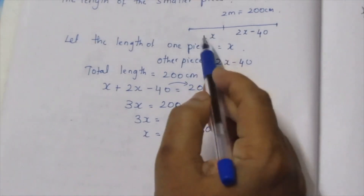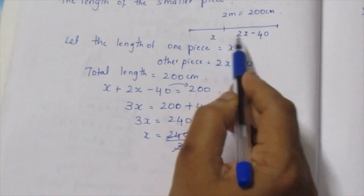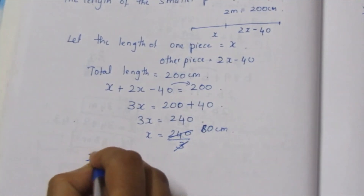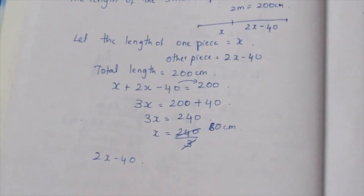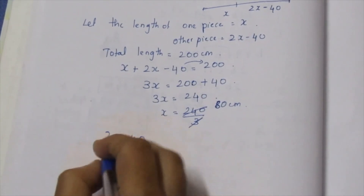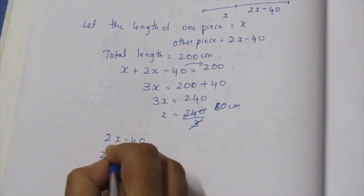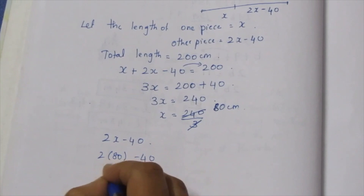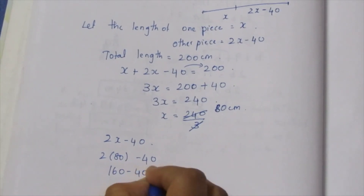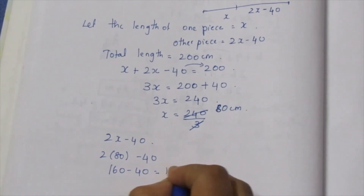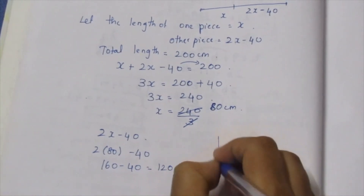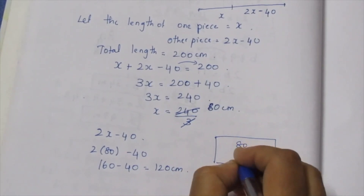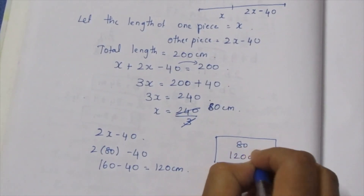So the first piece is 80cm. The second piece is 2x minus 40. Substituting x equals 80: 2 times 80 is 160, minus 40 gives 120cm. Therefore, the answer: the smaller piece is 80cm and the larger piece is 120cm.